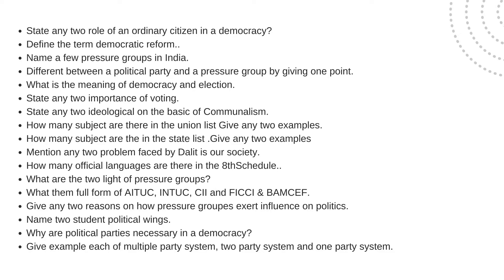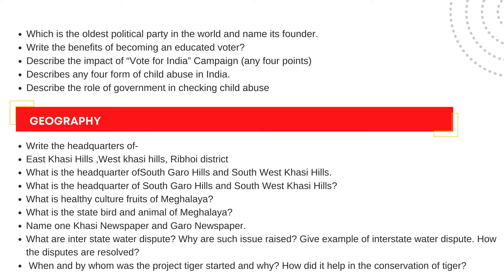Give examples of the multi-party system, two-party system, and one-party system. Which is the oldest political party in the world? Write the benefits of becoming an educated voter. Describe the impact of voter education for India — contain any four points. Describe any four points on child abuse in India. Describe the role of the government in checking child abuse.